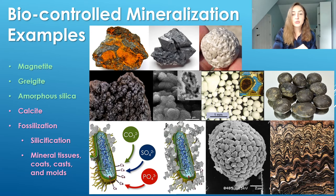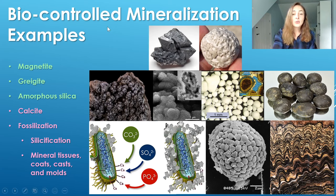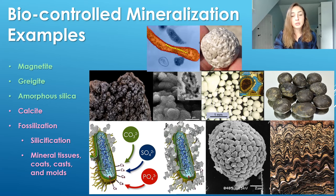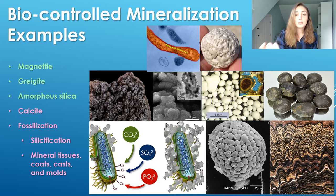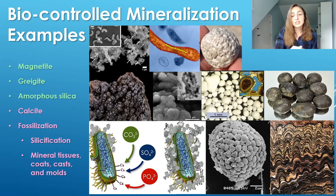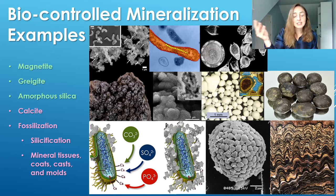Examples of minerals that can be formed by bio-controlled mineralization include a list slightly different than what we saw for biologically induced minerals. We don't have iron hydroxides like we had last time, but we do still have magnetite listed here — that mineral can also be formed by biologically controlled mineralization. However, in the case of bio-controlled mineralization, it forms within cells rather than on the surfaces of cells or in the vicinity of cells as a byproduct. Greigite forms more similarly to the bio-controlled magnetite formation in that it's intracellular or intercellular and is more of a controlled process. And then amorphous silica again, but instead of just a byproduct, it's a more controlled process.